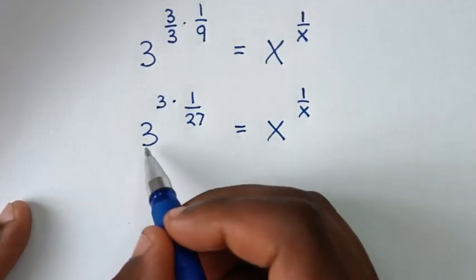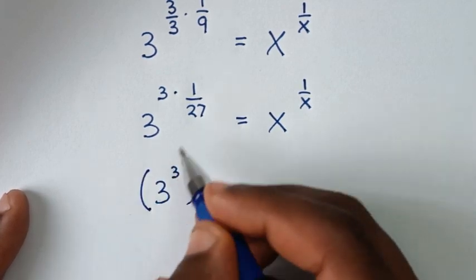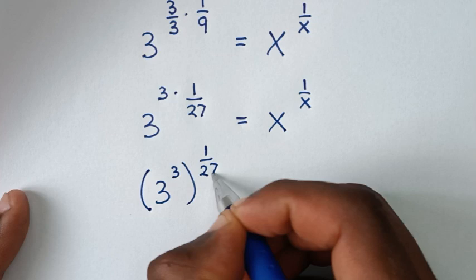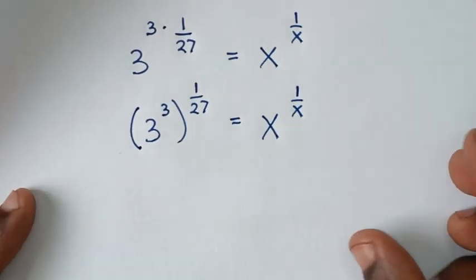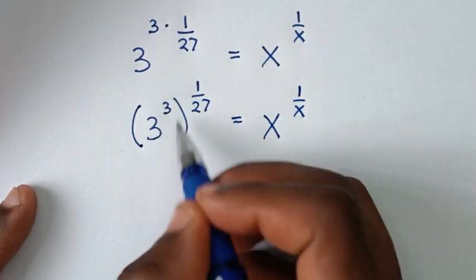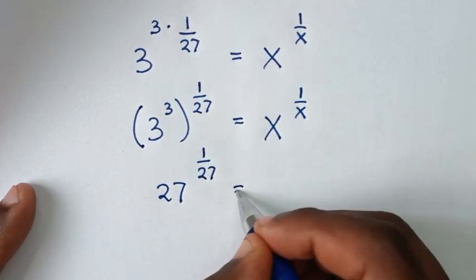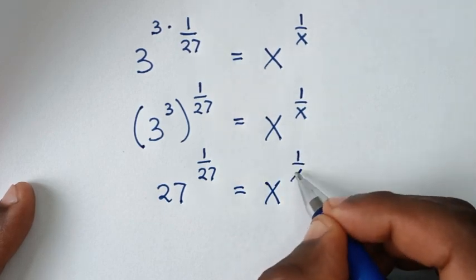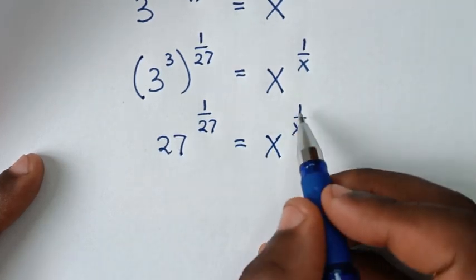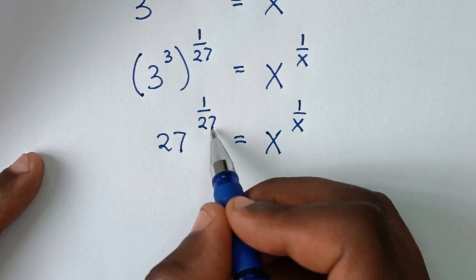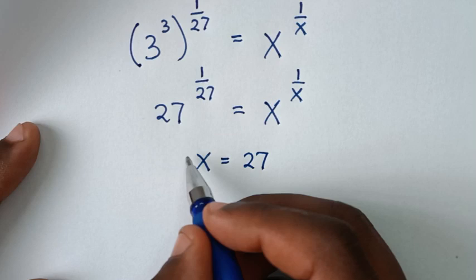In the next step, we take 3 to the power of 3 inside the bracket, giving (3^3) to the power of 1/27 outside the bracket, which equals x to the power of 1/x. Since 3^3 is 27, we have 27 to the power of 1/27 equals x to the power of 1/x. Comparing the bases, x equals 27, and the powers 1/x equals 1/27 confirm x equals 27 — this is our final answer.